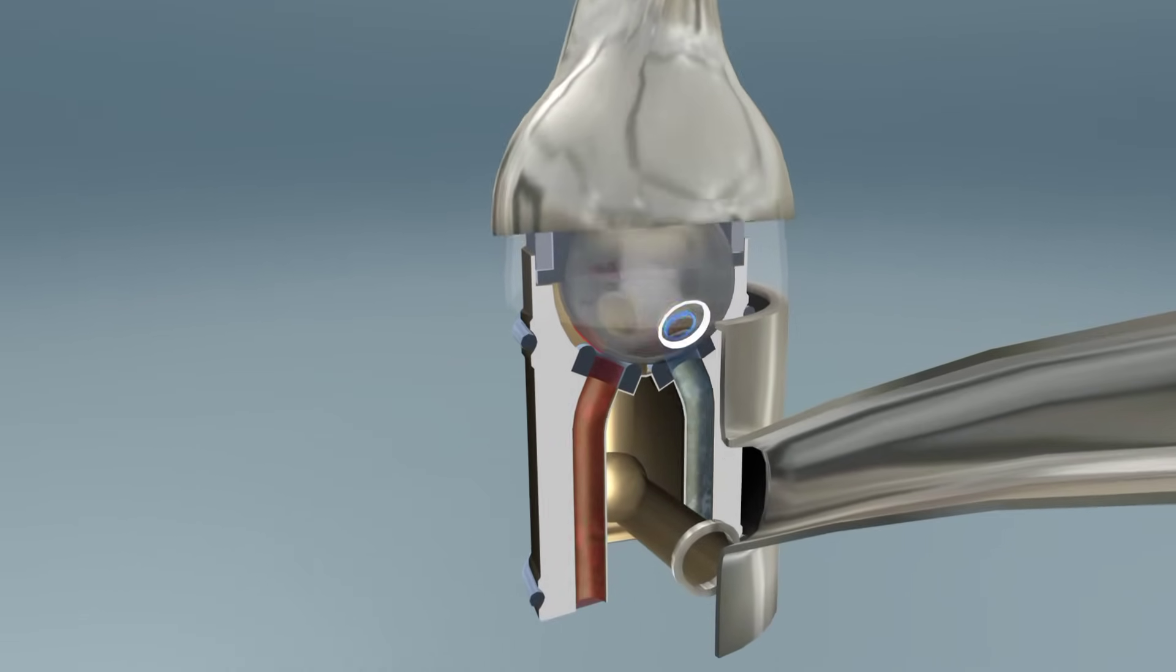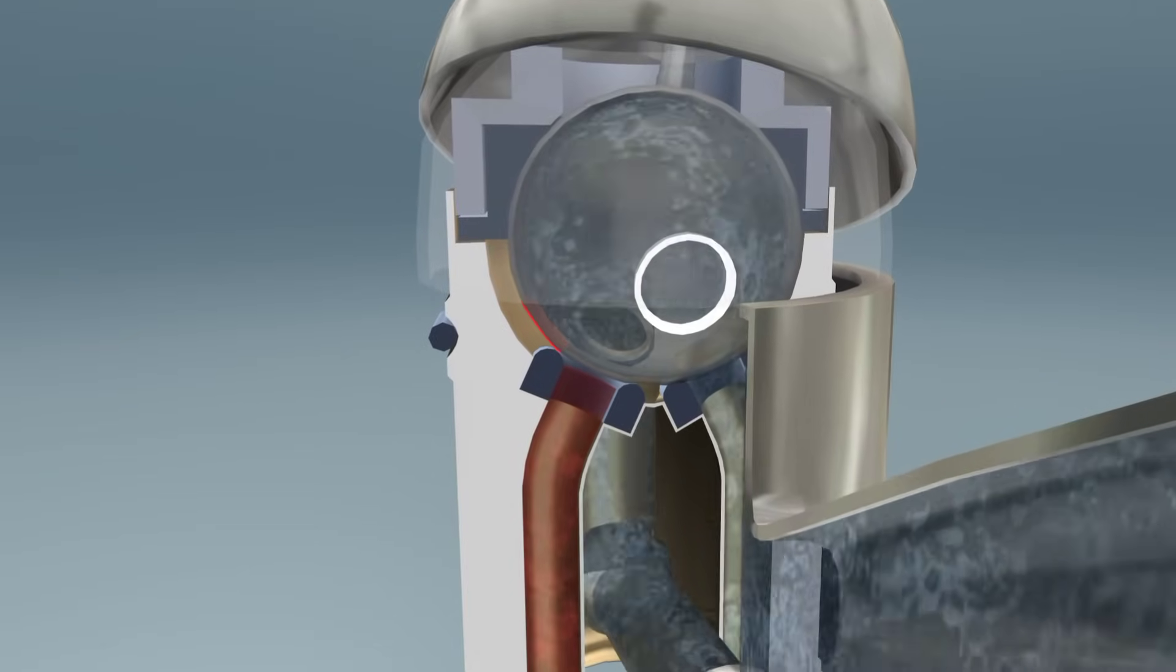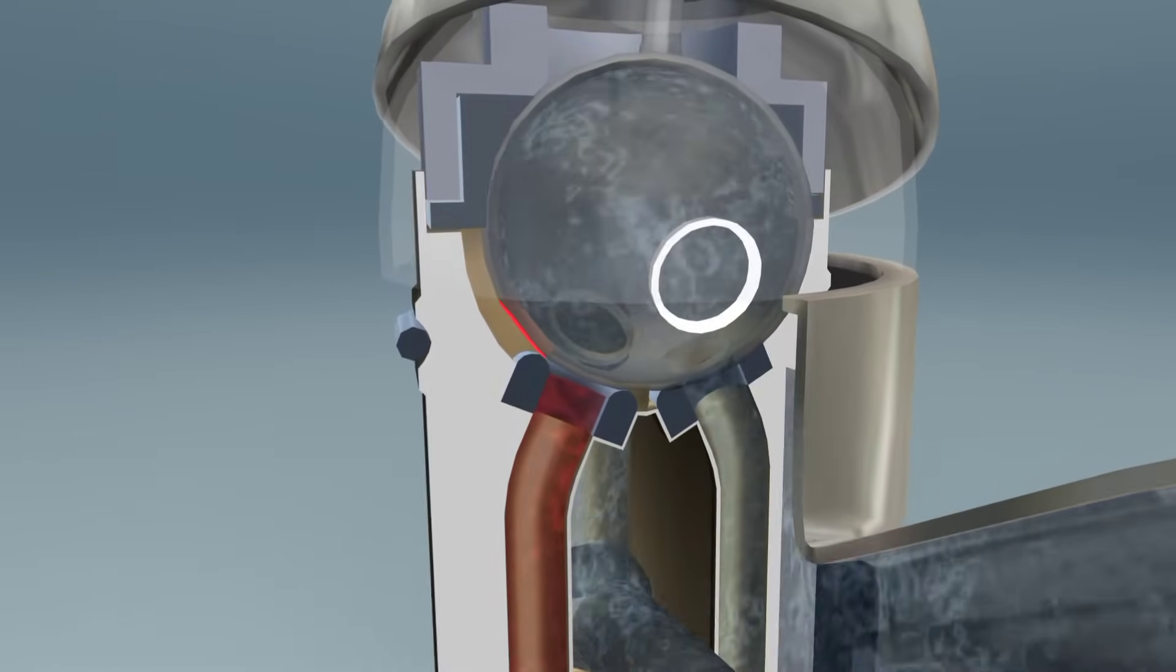When you turn the lever right and raise it, the hole with the blue rim is adjusted for the cold water pipe, so cold water flows into the ball.